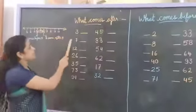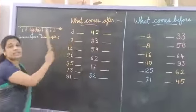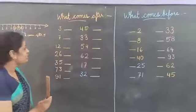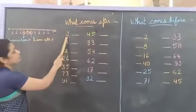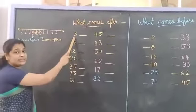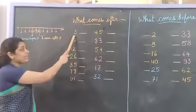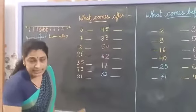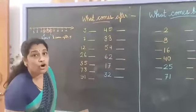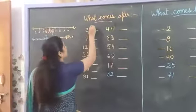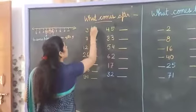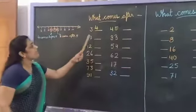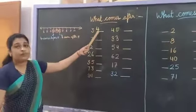Now let's practice. What comes after? Let's start. Which number is this? 3. What comes after 3? 4. We have to write 4 here. 3, after, 4.